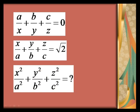So, two values are given: a/x + b/y + c/z = 0 and x/a + y/b + z/c = √2. We have to find out the value of x²/a² + y²/b² + z²/c².